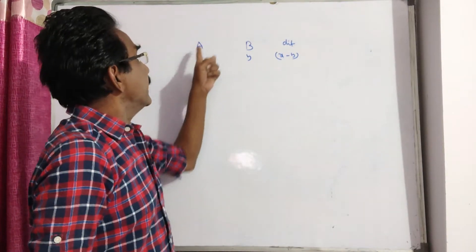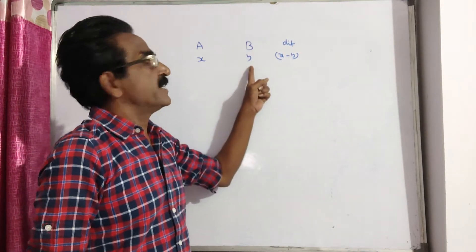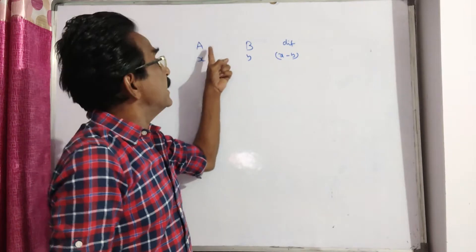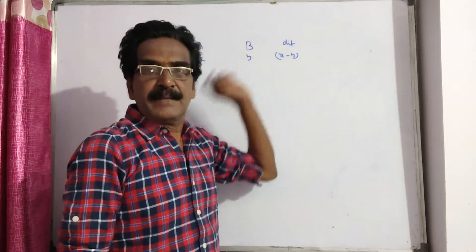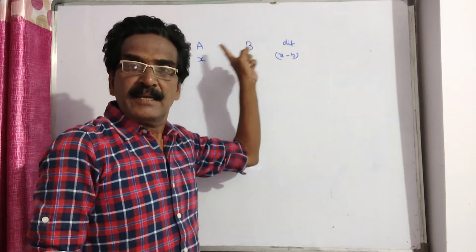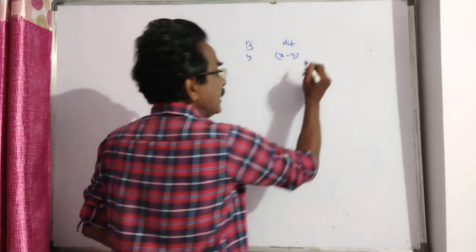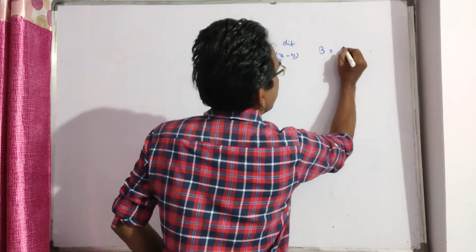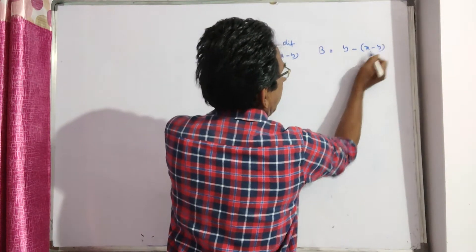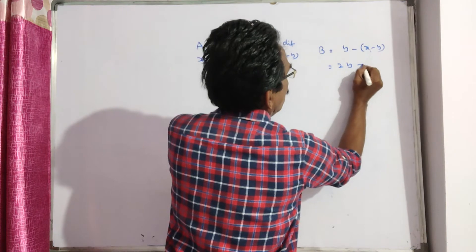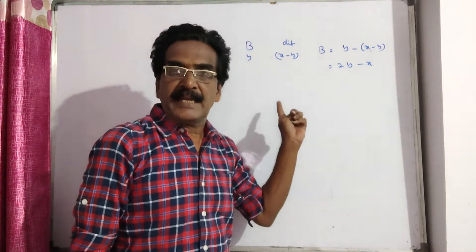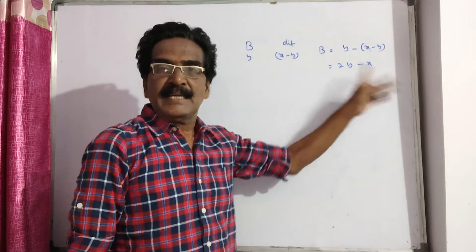Say A is x years, B is y years, and the difference between the ages is x minus y. When A was at the age of B, then B will be y minus the difference of the ages, that is x minus y. It implies B is equal to 2y minus x. So when A was at the age of B, then B would be 2y minus x.